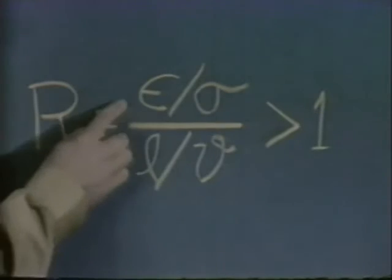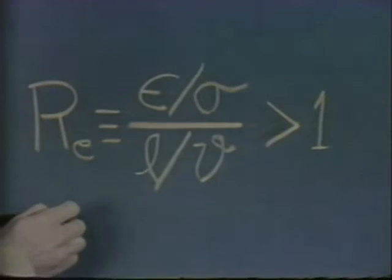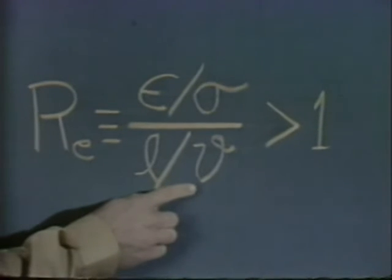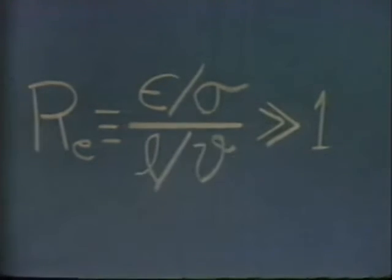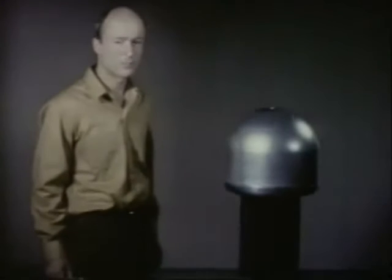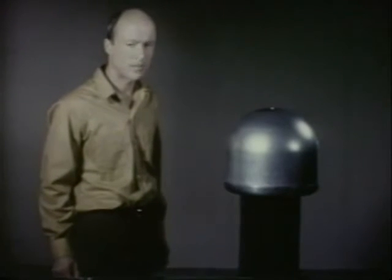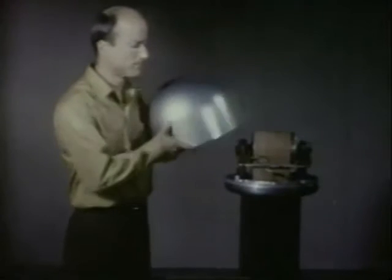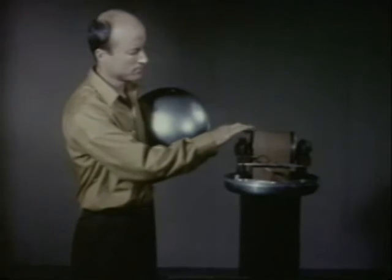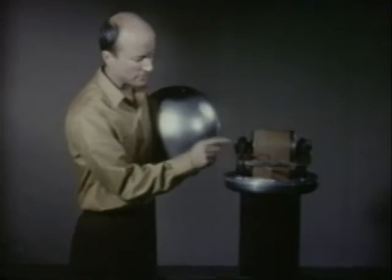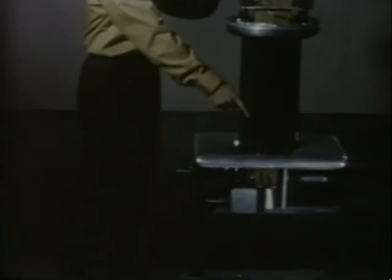The electric Reynolds number, based on the properties of the air, the distance of travel, and the drop velocity, is large. In a high-voltage Van de Graaff generator, the falling drops are replaced by a moving insulating belt. Charges are placed on the belt by a corona source at the bottom. They are removed at the top, where they accumulate on the dome.